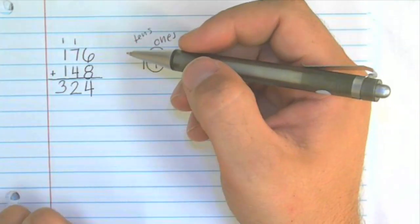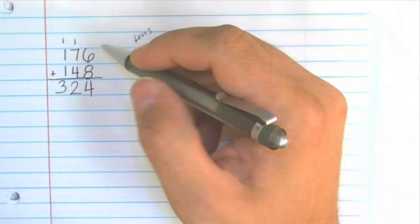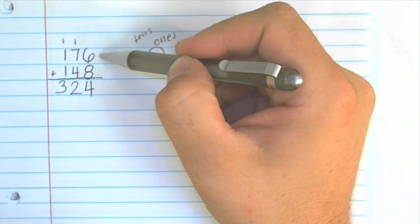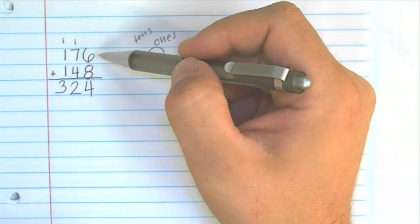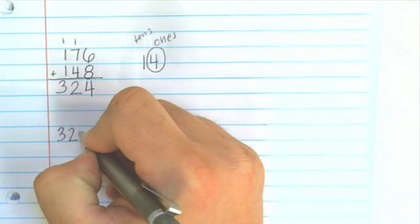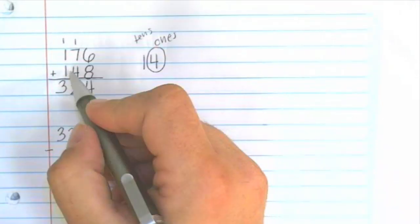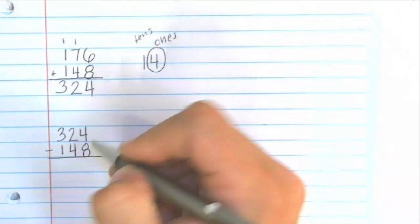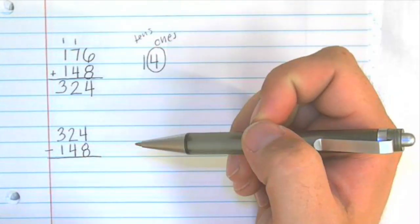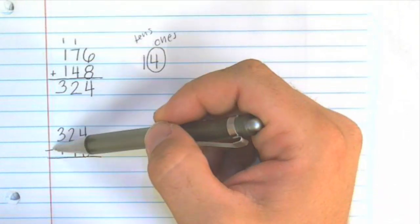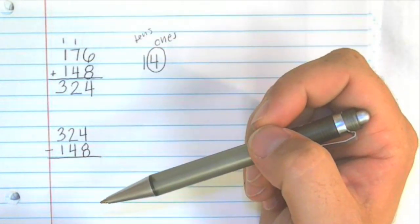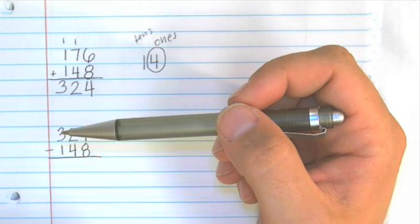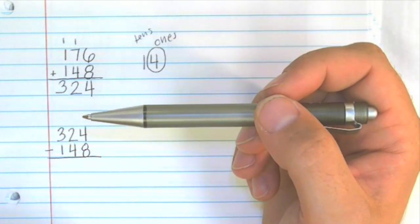Now if you want to check this problem using the inverse operation you can take this number 324 and subtract 148 from it and you should get 176 if you did everything correctly. Let's try that. So we have 324 minus 148. In this way not only are you checking your problem with the inverse operation you get to practice an addition and subtraction problem at the same time. And of all the things you're going to learn in math, addition, subtraction, multiplication and division of basic numbers is the key that you want to know your whole life.